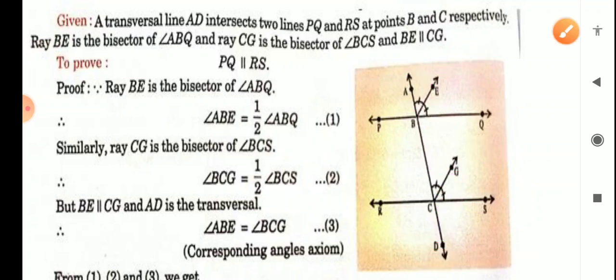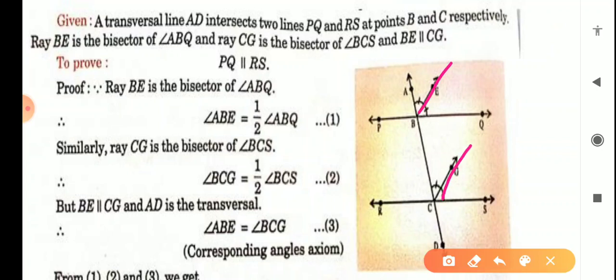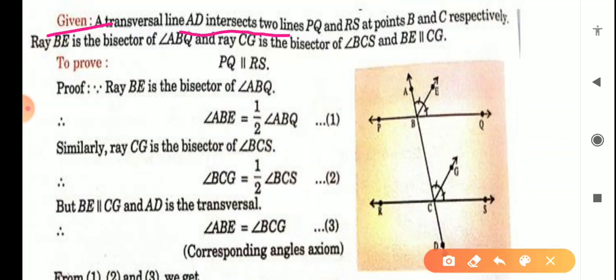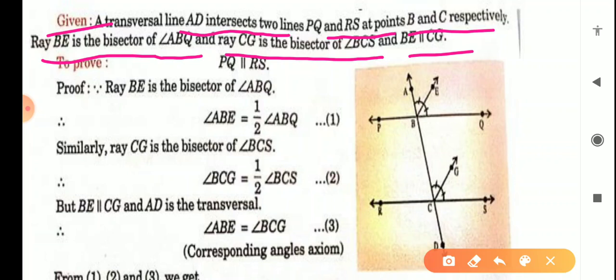We have to prove that these lines are parallel, meaning PQ parallel to RS. Given that BE parallel to CG. Now you write the given: transversal AD intersects two lines PQ and RS at points B and C respectively. Ray BE is the bisector of angle ABQ and ray CG is the bisector of angle BCS, and BE parallel to CG. To prove: PQ parallel to RS.